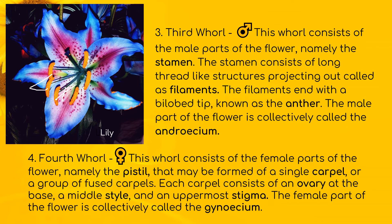Now let's look at the fourth whorl. This whorl consists of the female parts of the flower, namely the pistil, which may be formed of a single carpel or a group of fused carpels. Each carpel consists of an ovary at the base, a middle style, and an uppermost stigma. The female part of the flower is collectively called the gynoecium. So in this picture of a lily, this top part is known as the stigma, this long tube-like structure in the middle is the style, and we cannot see the ovary but it will be there.